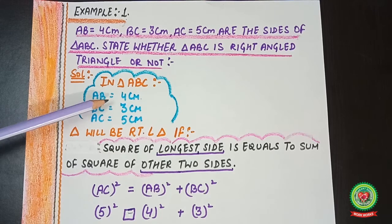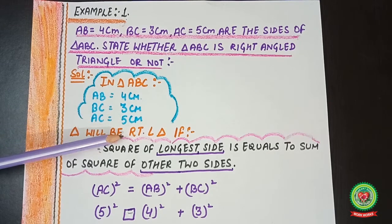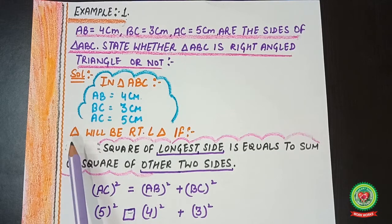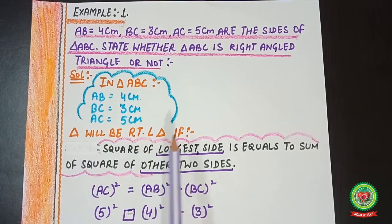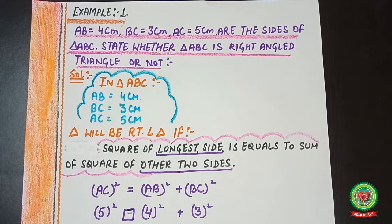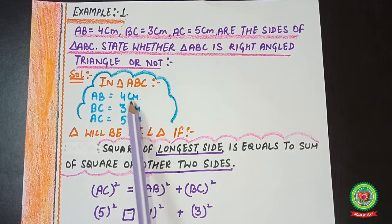In triangle ABC, AB = 4 cm, BC = 3 cm, and AC = 5 cm. We apply the property of the Pythagoras theorem: the square of the longest side equals the sum of the squares of the other two sides. The triangle will be a right angle triangle if this condition holds. The longest side here is AC = 5.